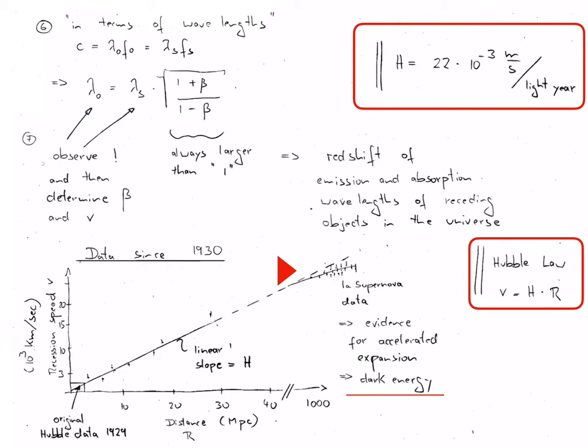And it is apparent that the two, V and distance R given in megaparsecs, have a linear relationship with a defined slope H. The constant of proportionality between V and R has been named the Hubble constant. The accepted value of this constant is 22 times 10 to the minus 3 meters per second per light year.